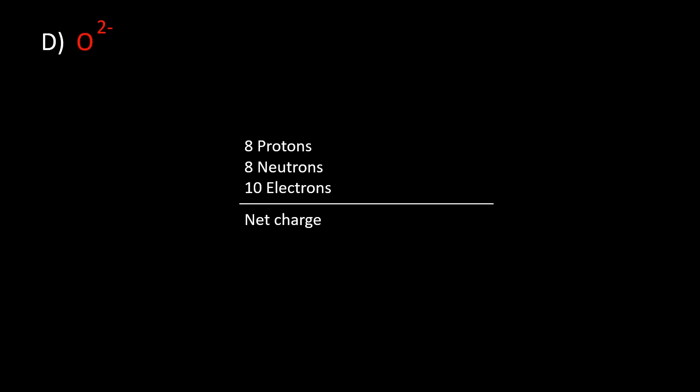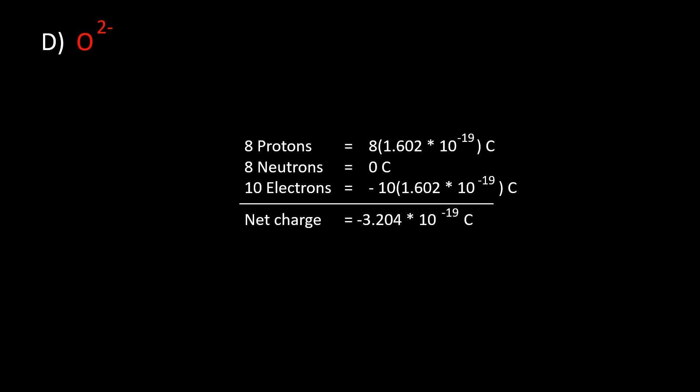For atom D, the net charge is −3.204×10⁻¹⁹ Coulombs. There are eight protons, ten electrons, and eight neutrons. The negative charge exceeds the positive charge, meaning that if you sum all the charges, the resulting charge will be net negative.